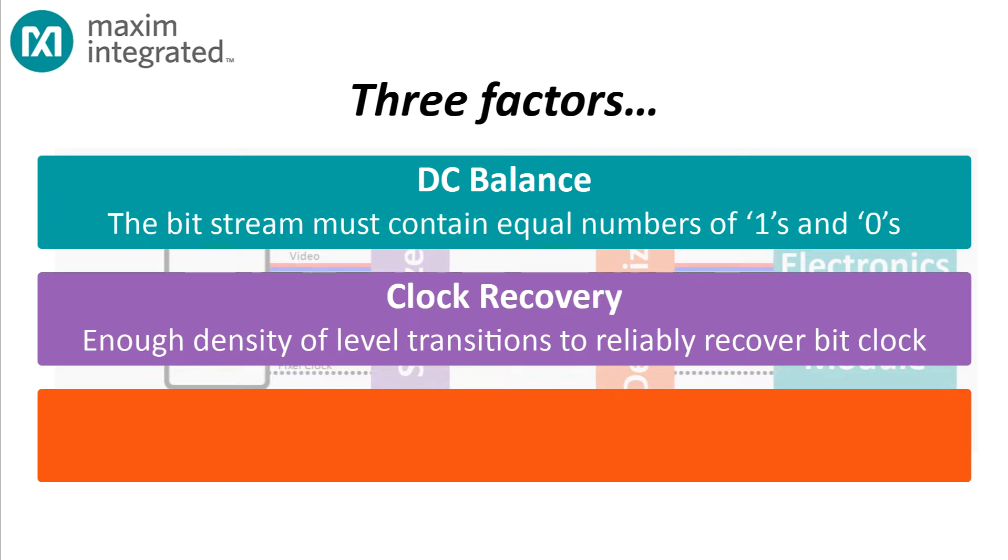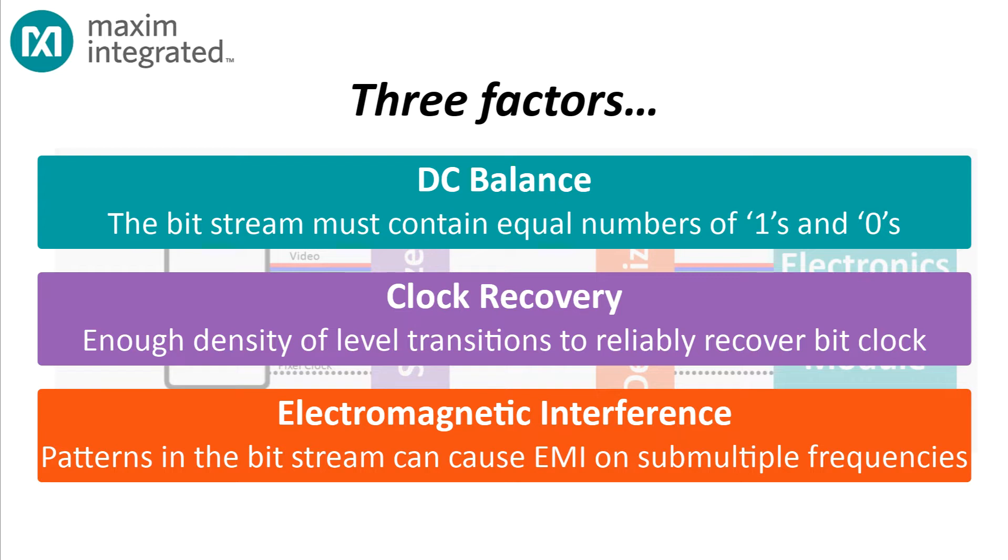The third factor is EMI, and it's well understood that a train of pulses will generate harmonics at multiples of the pulse frequency. But if the pulse train has a regular pattern, then the signal will also contain subharmonics as well. And these subharmonics could easily reach down into the UHF or even the VHF bands and create unacceptable interference.